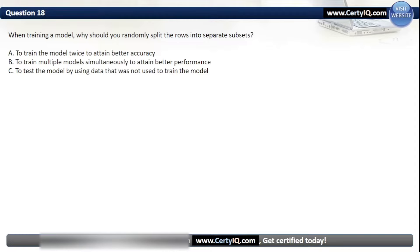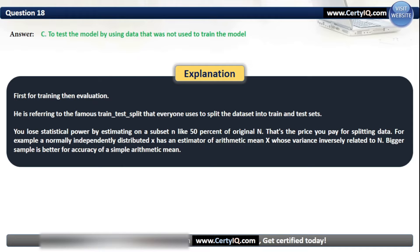Question 18. When training a model, why should you randomly split the rows into separate subsets? Options: A. to train the model twice to attain better accuracy, B. to train multiple models simultaneously to attain better performance, or C. to test the model by using data that was not used to train the model. The correct answer is C. This refers to the train-test split used to split the dataset into train and test sets. You lose some statistical power by estimating on a subset, but this is the price you pay for splitting data to get an unbiased evaluation.